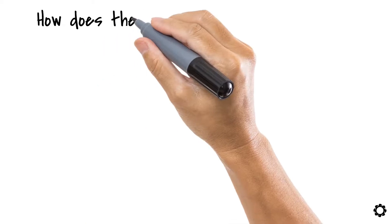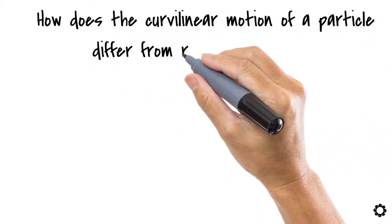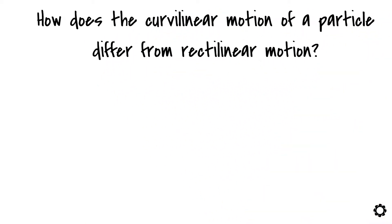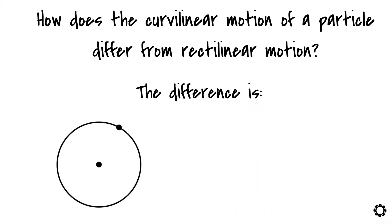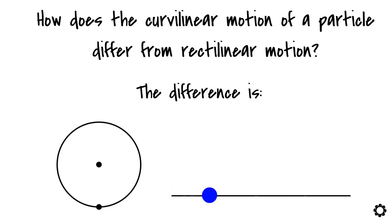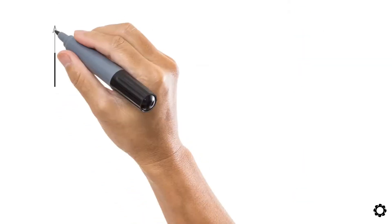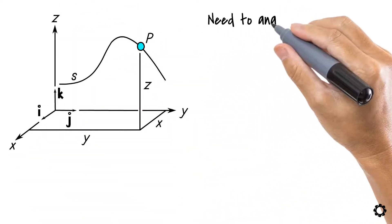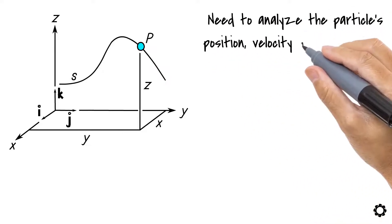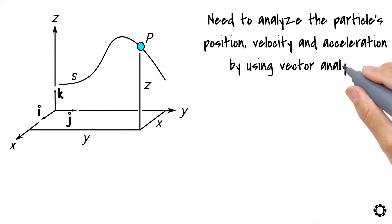So how does curvilinear motion of a particle differ from rectilinear motion? The difference is that in curvilinear motion, the particle moves along a curved path, whereas in rectilinear motion, the particle moves along a straight line. Another difference is that since in curvilinear motion the path of the particle is often three-dimensional, we need to analyze the particle's position, velocity, and acceleration by using vector analysis.